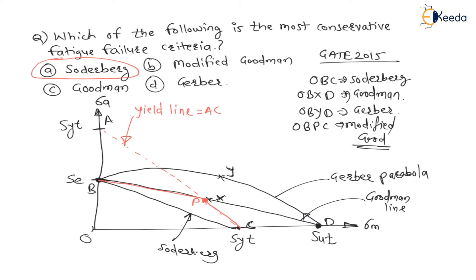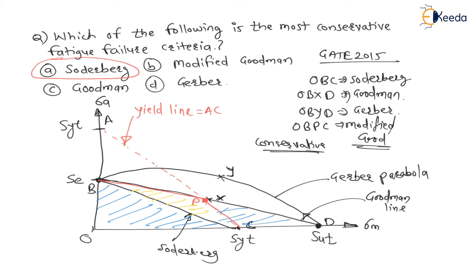Now we have plotted all four regions. The term 'most conservative' means the criterion with the minimum safe area — the smaller the area under the curve, the more conservative it is. The minimum area belongs to the Soderbergh line, followed by modified Goodman, then Goodman, and the maximum area belongs to Gerber.